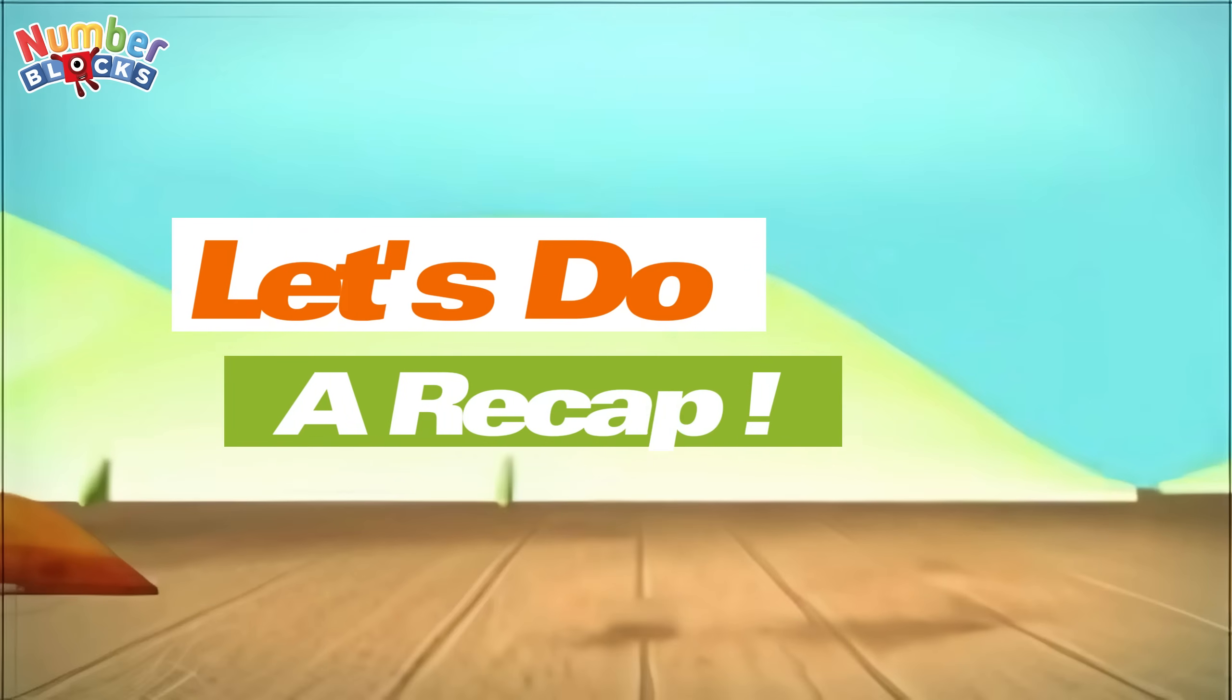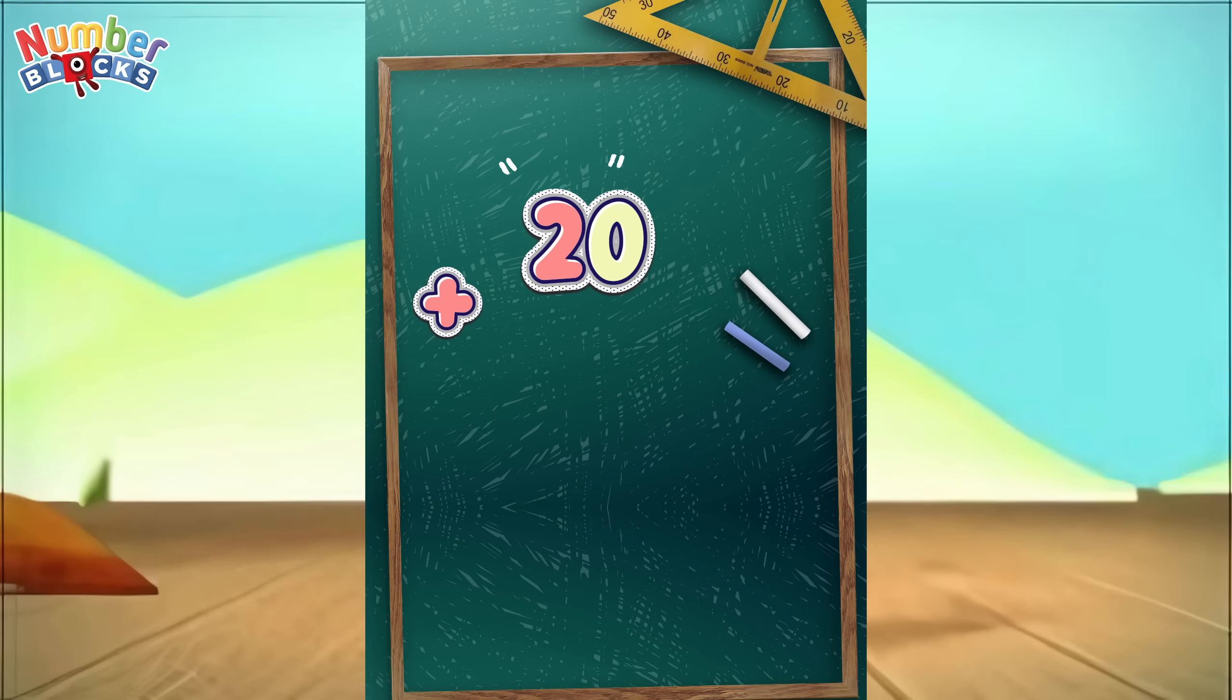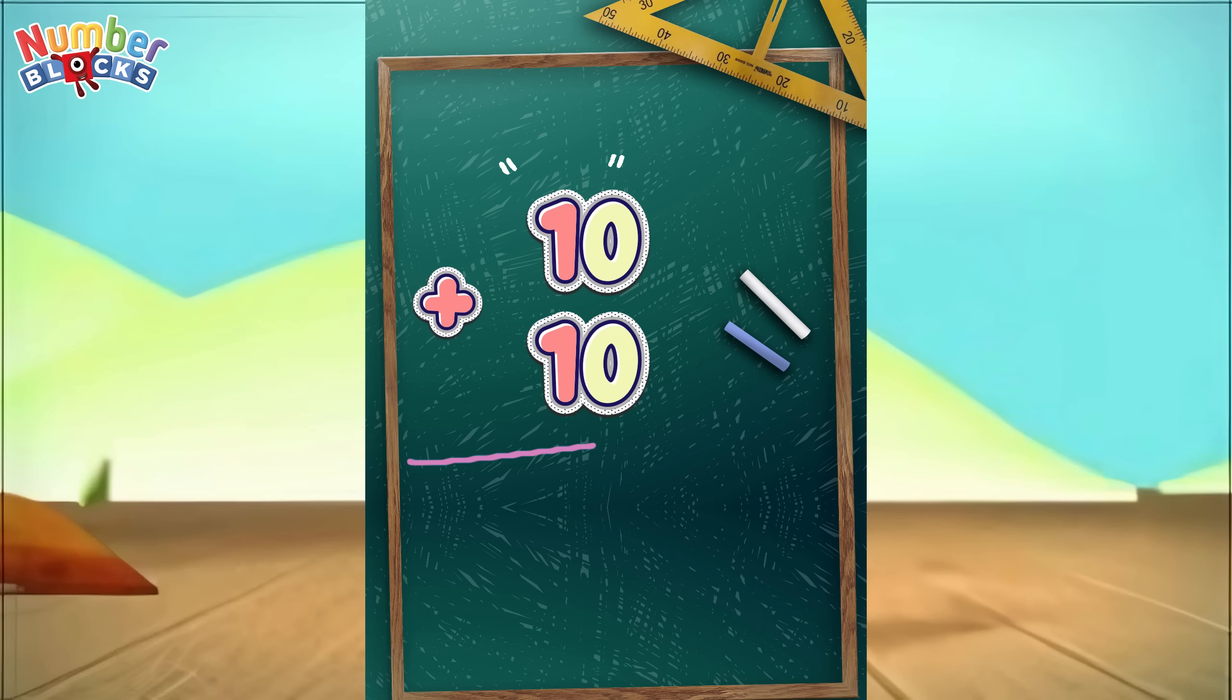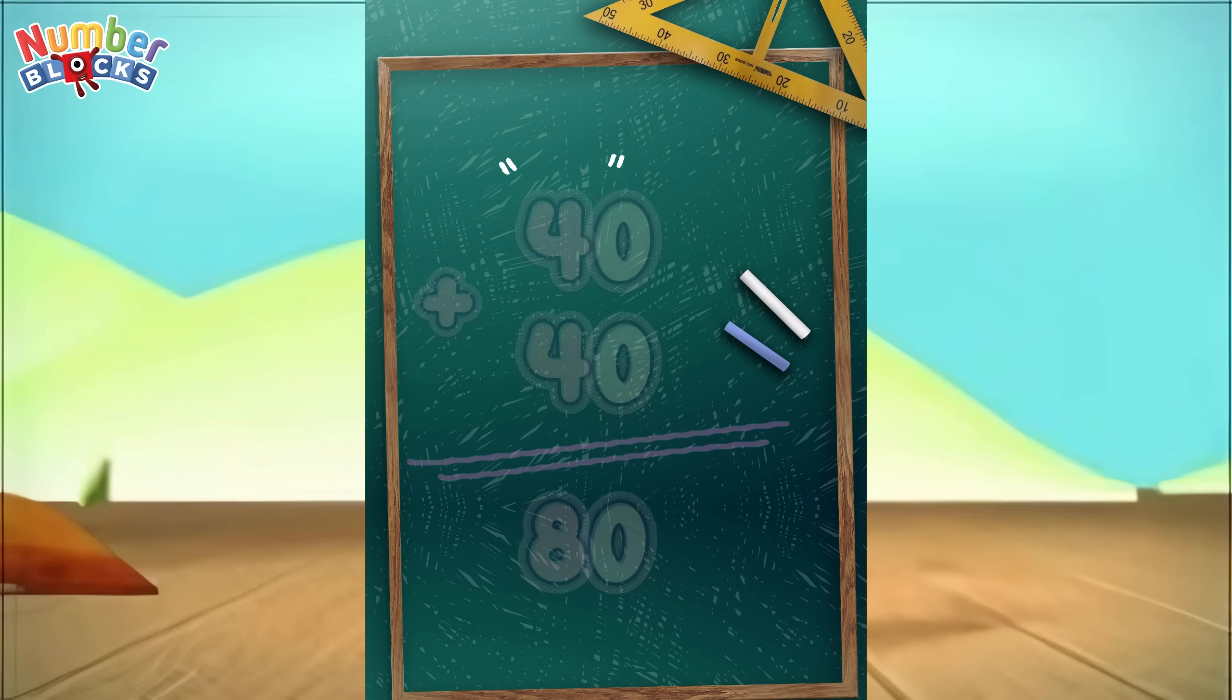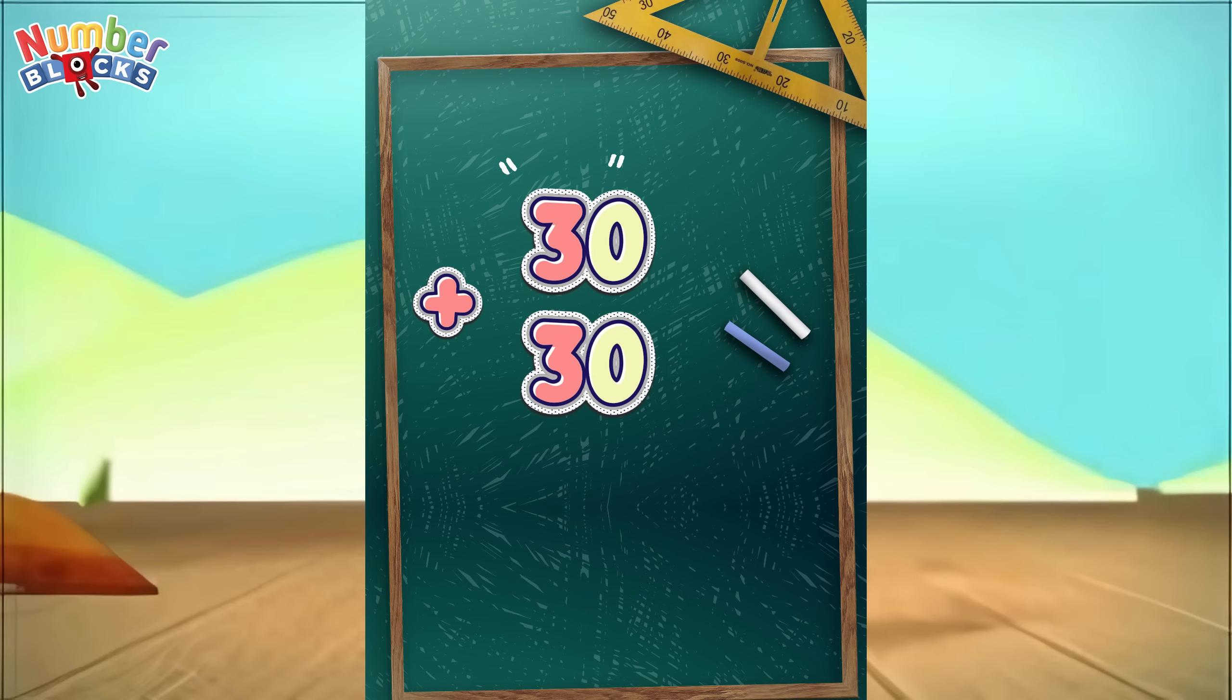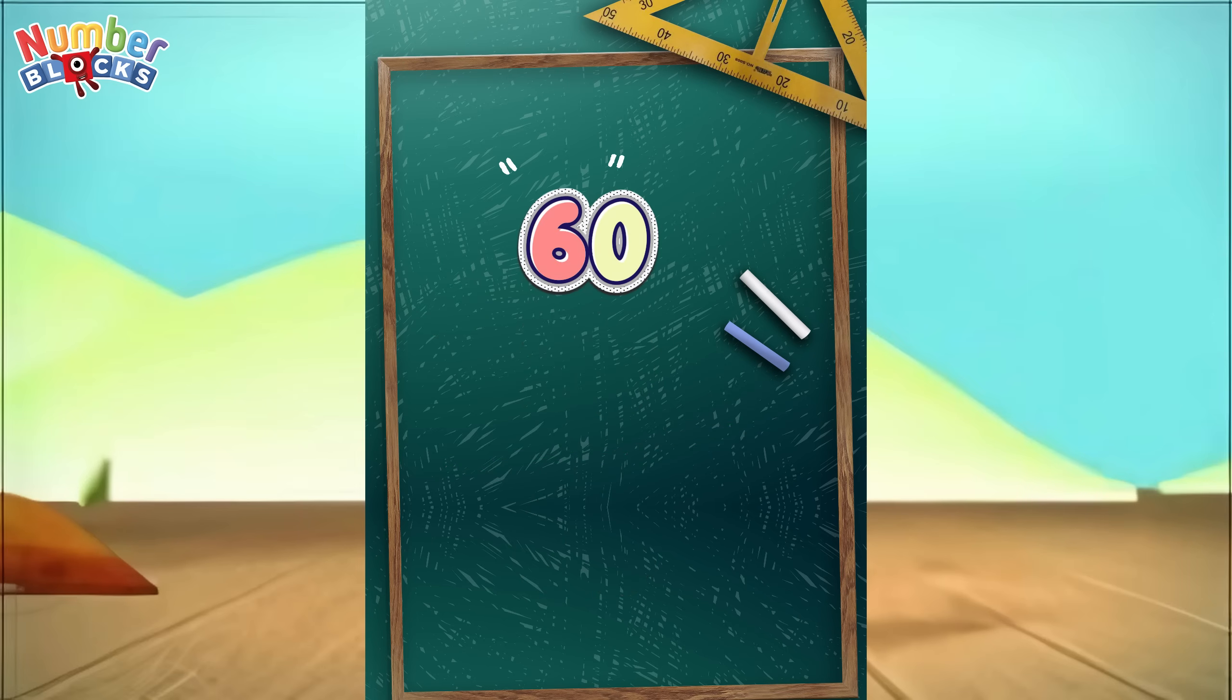And now let's do a recap. 20 plus 20 equals 40. 10 plus 10 equals 20. 40 plus 40 equals 80. 30 plus 30 equals 60. 60 plus 60 equals 120.